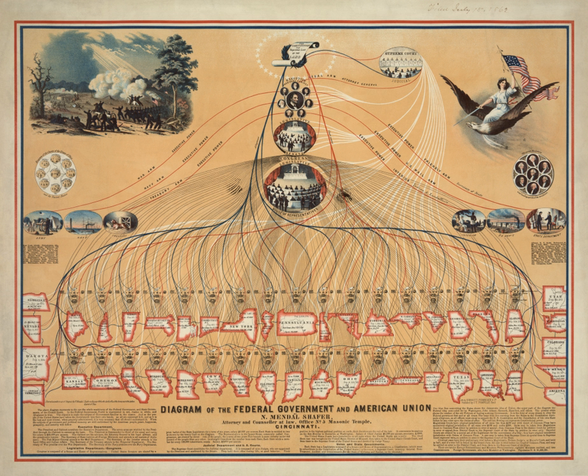The House currently consists of 435 voting members, each of whom represents a congressional district. The number of representatives each state has in the House is based on each state's population as determined in the most recent United States Census. All 435 representatives serve a two-year term. Each state receives a minimum of one representative in the House. In order to be elected as a representative, an individual must be at least 25 years of age, must have been a U.S. citizen for at least seven years, and must live in the state that he or she represents. There is no limit on the number of terms a representative may serve.